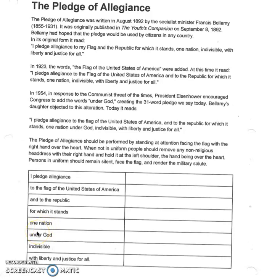'Under God' — when this was added in 1954, it was put in as a reference to the Christian God, because most people in the United States were Christian at that time. People who aren't Christian who say it today can interpret it as their own god or personal deity. Clearly in 1954 it was in response to communism, and the intention appears to be the Christian God. 'Indivisible' means that it cannot be split up into individual parts — one nation under God cannot be divided.